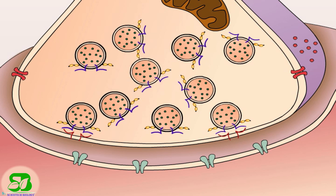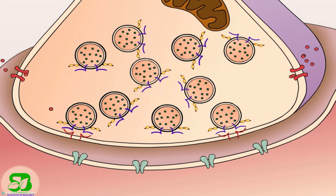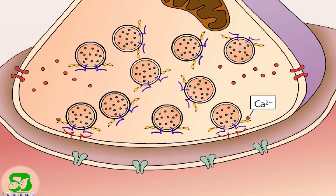The membranes of the synaptic vesicles are drawn together by protein complexes collectively called SNAREs, expressed on the vesicles and presynaptic membrane. When the axon terminal is depolarized, voltage-gated calcium channels open and calcium ions rush into the axon terminal. Some of the calcium ions bind to a protein in the synaptic vesicle membrane called synaptotagmin. When calcium binds to synaptotagmin on the synaptic vesicles nearest the active zone, the vesicles are drawn even closer to the presynaptic membrane.